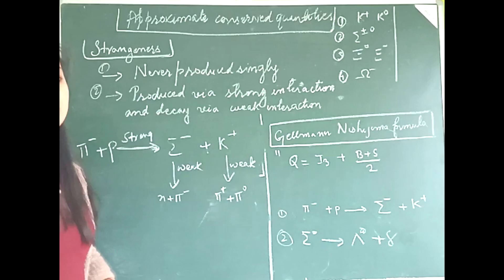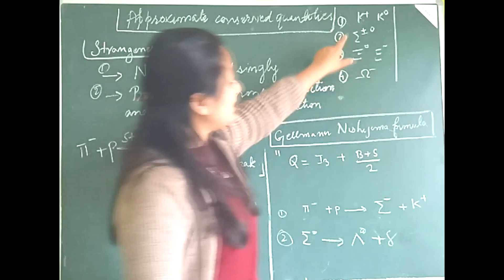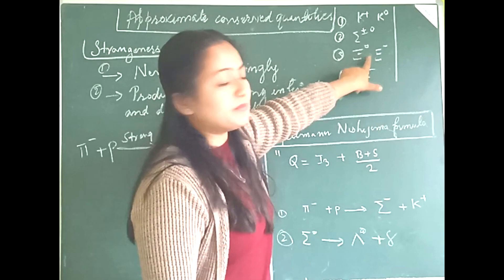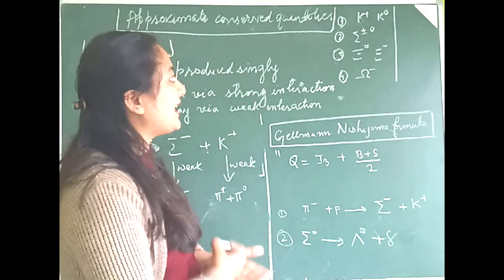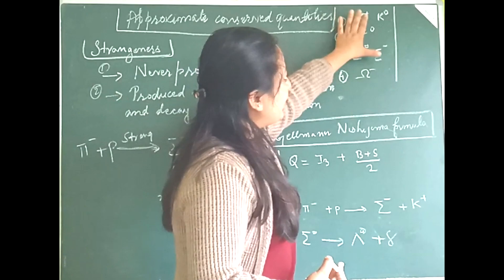Examples of strangeness particles are kaons and hyperons. Hyperons include sigmas, cascades (symbolized accordingly), and omegas. Hyperons are baryons that are slightly heavier than nucleons.